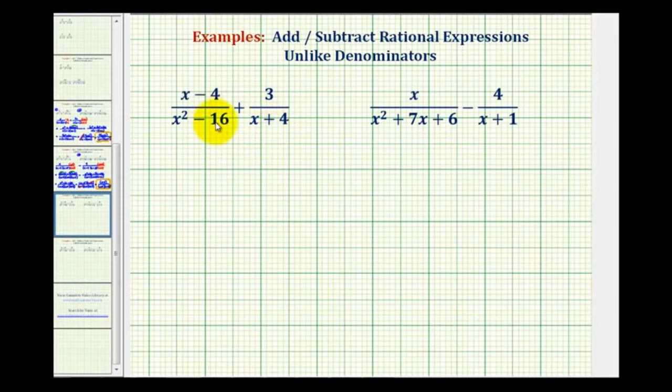So for this example here, we're going to start by factoring x squared minus 16. So we have x minus four all over, this is a difference of squares, so it will factor into two binomial factors where one factor is x plus four and one factor is x minus four.